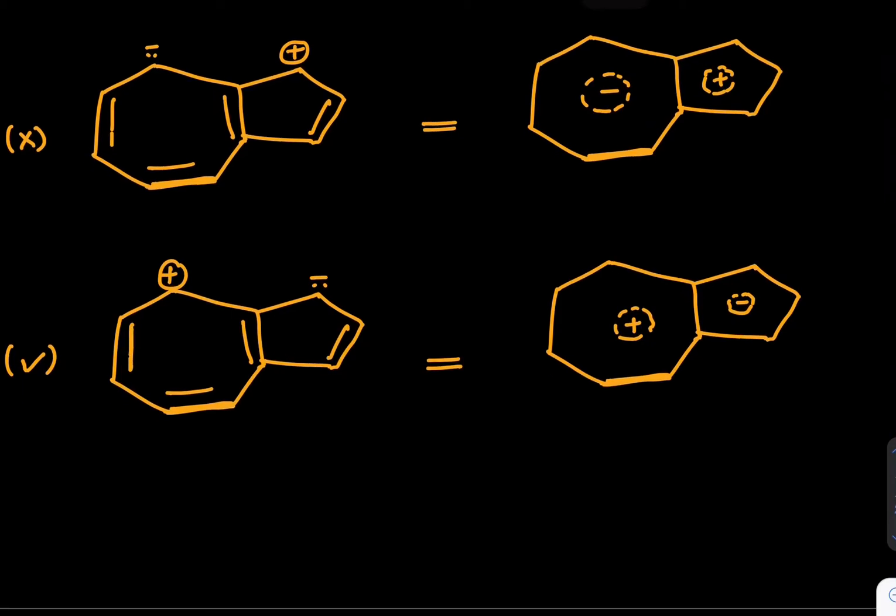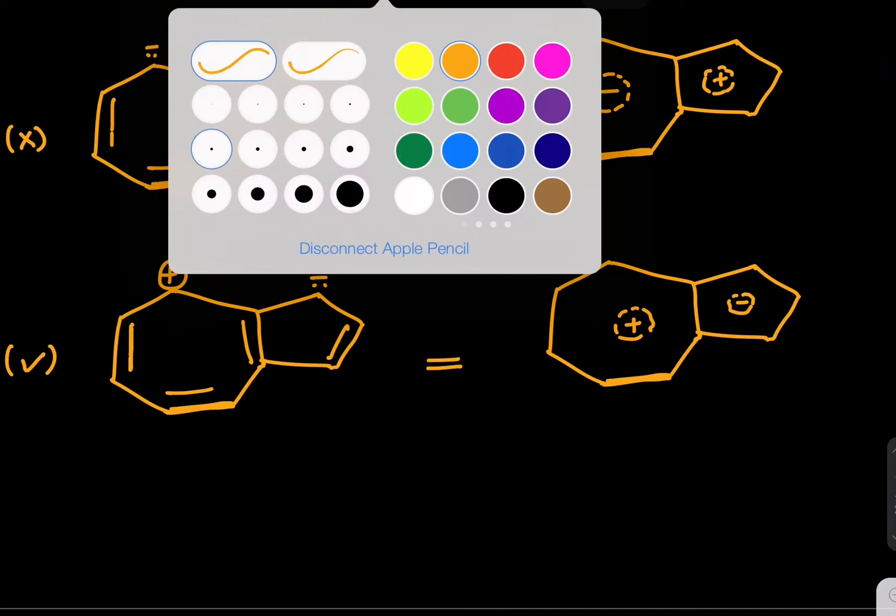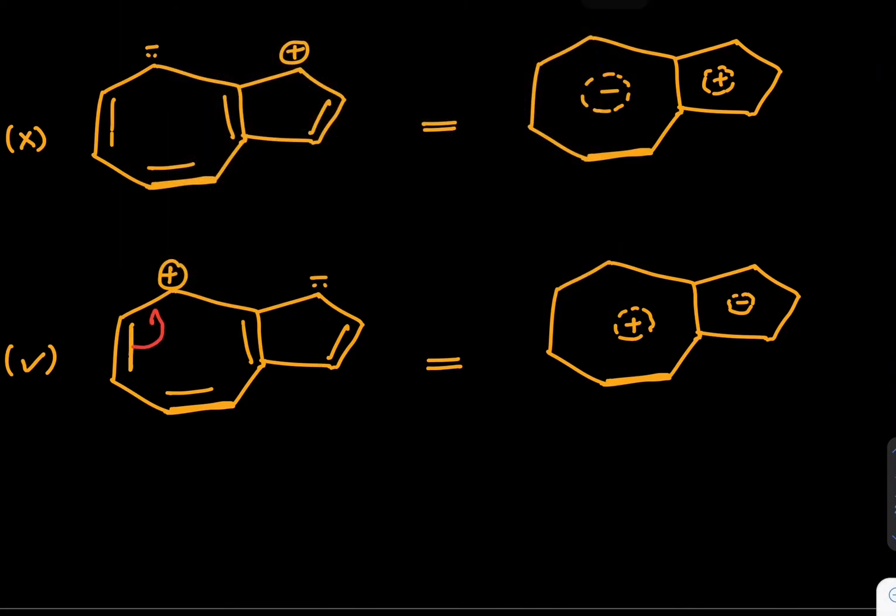If you check this structure there's a double bond here and if we draw the bond moments in the structure we can say this will move like this. Plus charge can appear here, next time this will move, then plus charge will reach here. Next time this can move, then plus charge can reach here. Like that it can keep on moving.